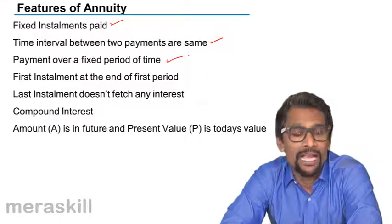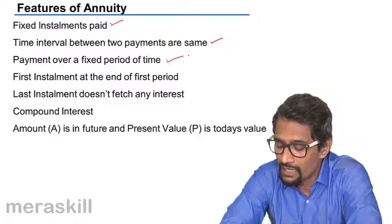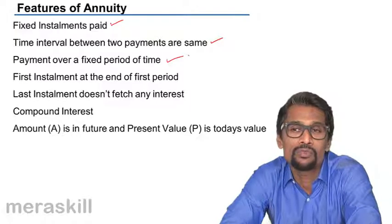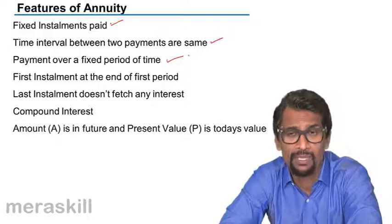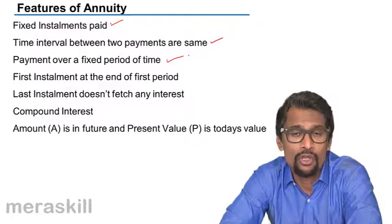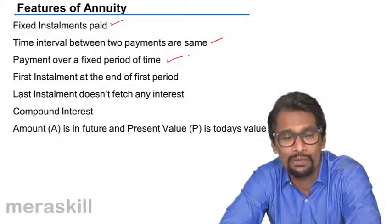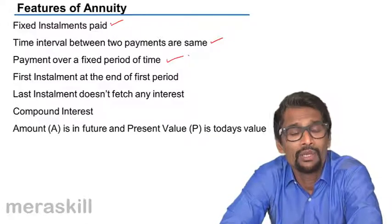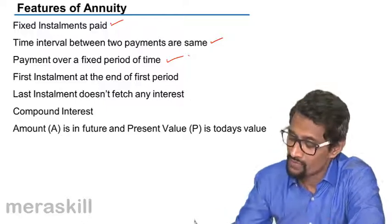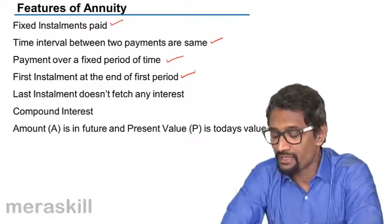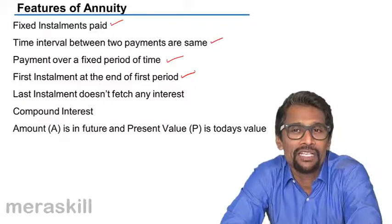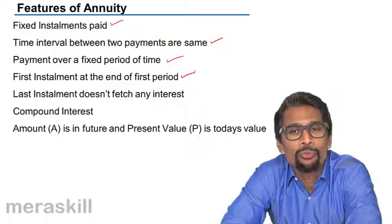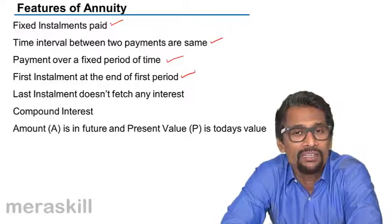For a regular annuity, the first installment is at the end of the first period. Suppose the loan has been sanctioned today and you're paying EMIs — your first installment will be paid not today, but at the end of one month. If you're paying on an annual basis, your first installment will not be paid today when the loan is sanctioned, but at the end of one year. The last installment doesn't fetch any interest because on the day you pay it, your maturity has been attained, so it does not earn any interest.